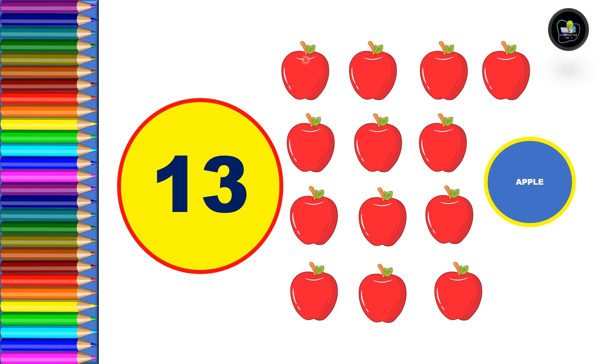Thirteen. So in first row: one, two, three, and four. Five, six, seven. Eight, nine, ten. Eleven,